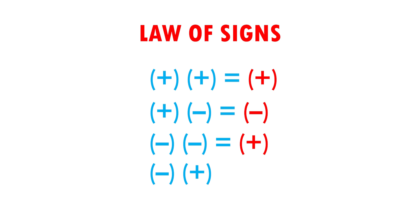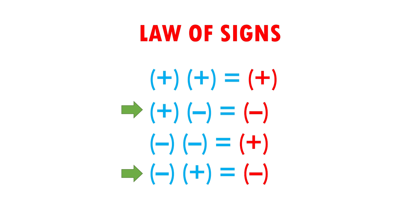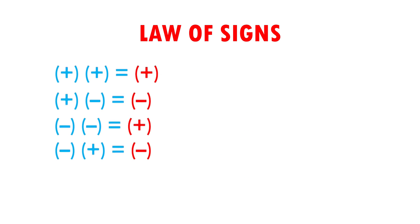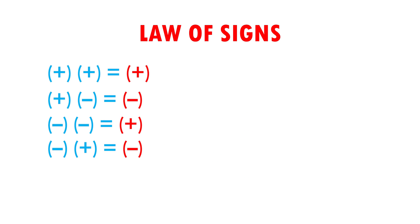Negative times positive equals negative. As you can see, when you multiply two equal signs, the result is positive. When you multiply two different signs, the result is negative. I am going to put the rule of signs here to support us in case there is any doubt. So that is clear to us, we are going to see some exercises.